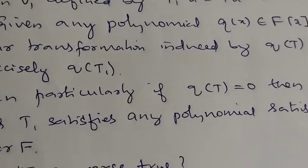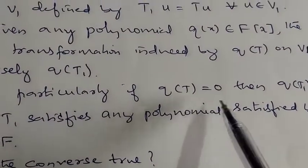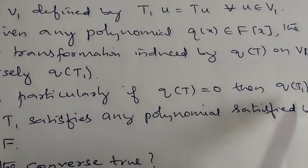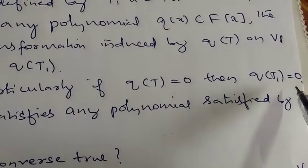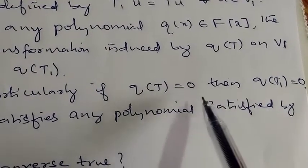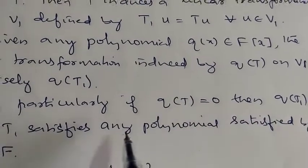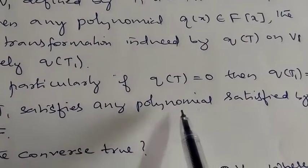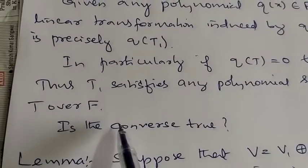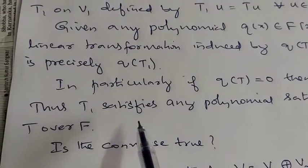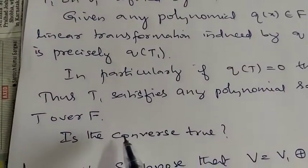In particular, if Q(T) = 0, then Q(T1) is also 0. Thus, T1 satisfies any polynomial satisfied by T.